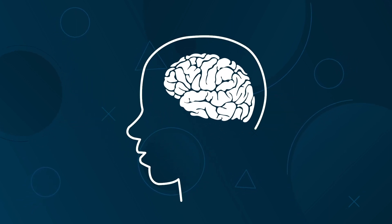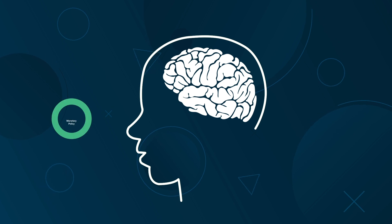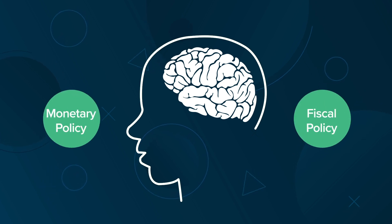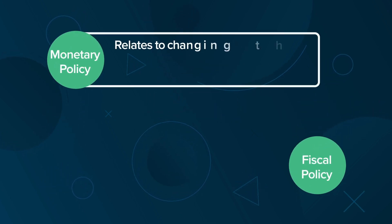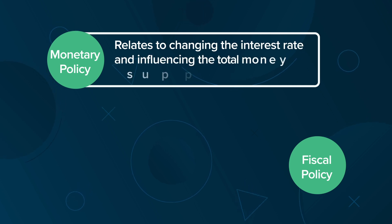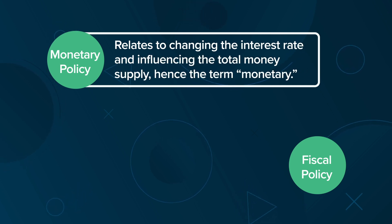People's beliefs about the relationship between macroeconomic factors affect both monetary and fiscal policies. Monetary policies relate to changing the interest rate and influencing the total money supply, hence the term monetary.